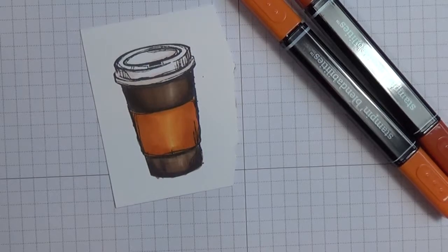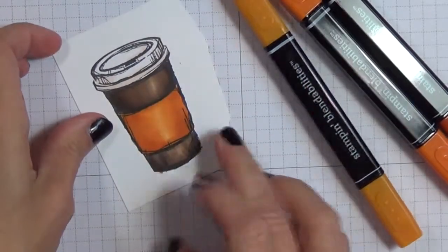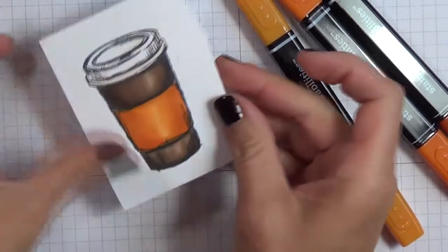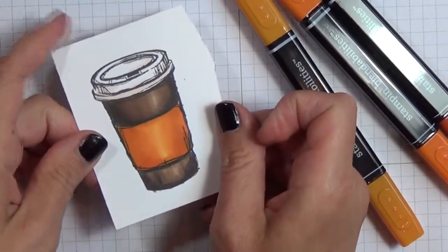So there you go. Super easy. You can still kind of see the light hitting my cup. And then I'm going to fussy cut this and add it to my gift card holder.